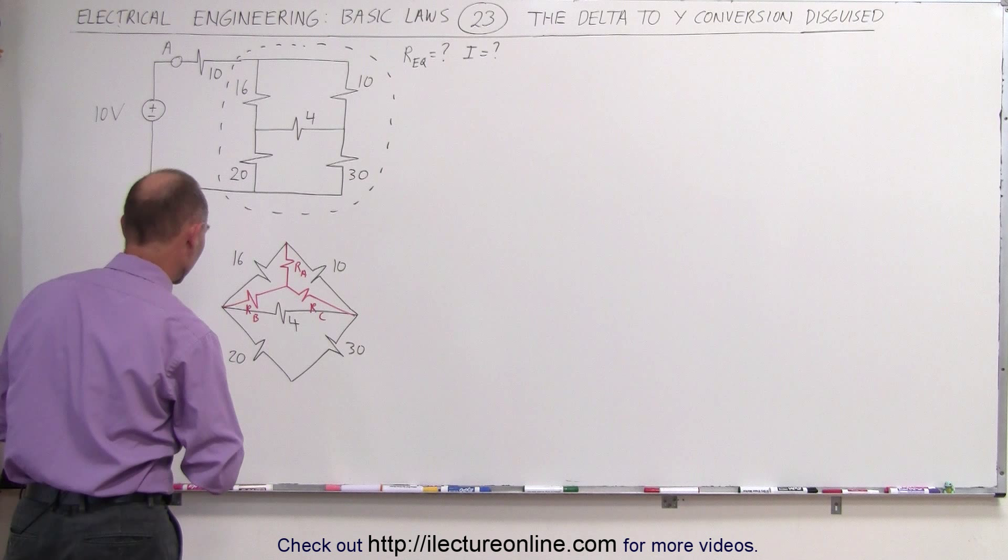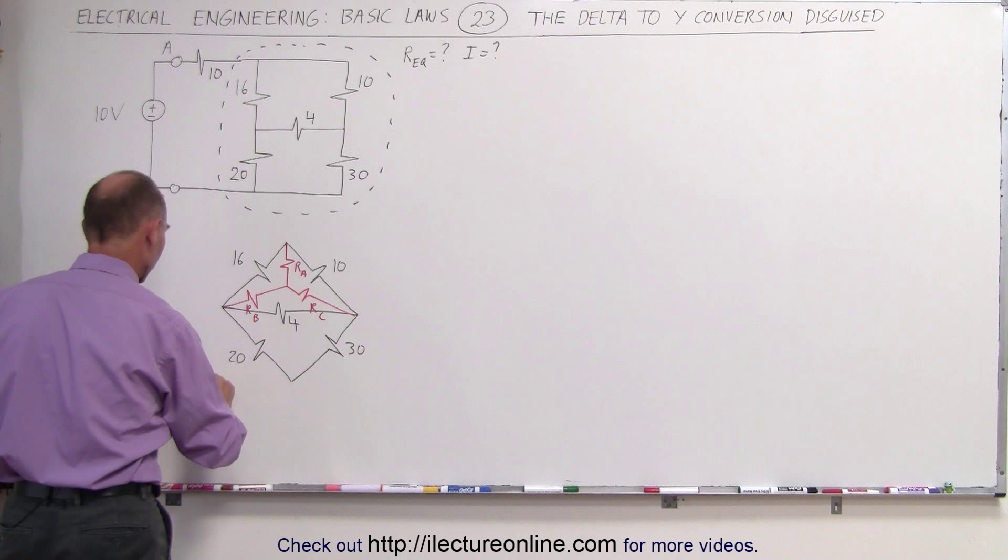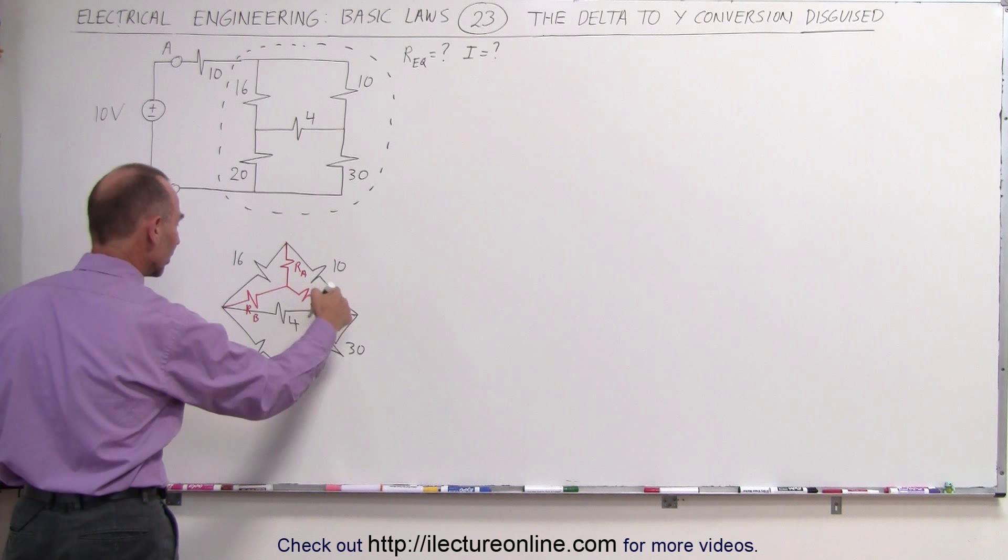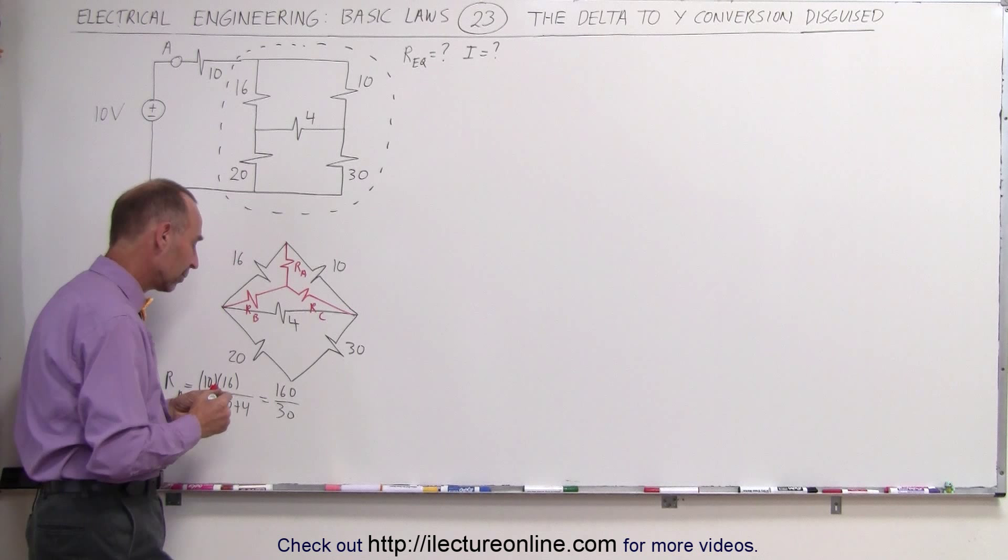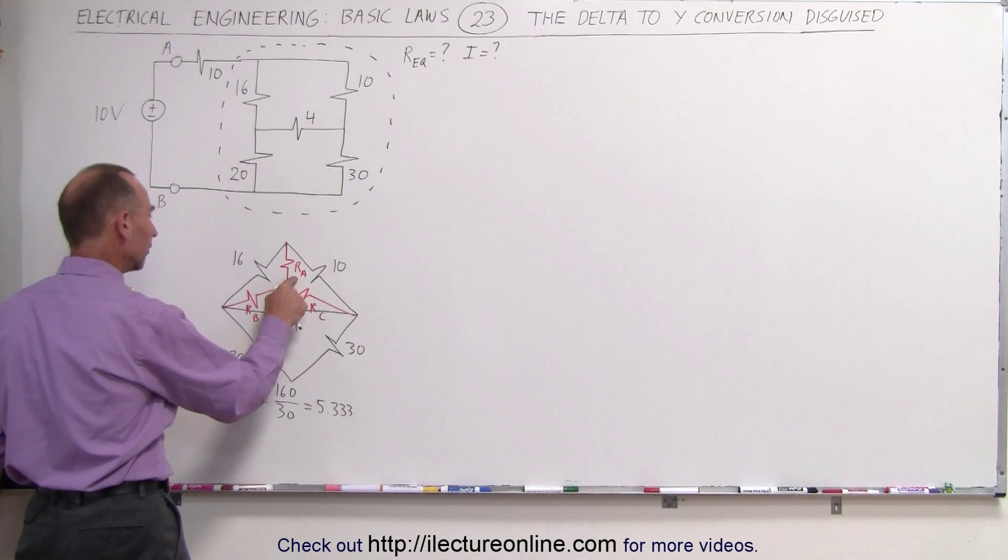R sub A is equal to the product between those two, which is 10 times 16, divided by the sum of all three resistors in the delta. That's 16 plus 10 plus 4, which is equal to 160 divided by 30, and that's 16 divided by 3, which is equal to 5.333. So the equivalent for R sub A is 5.333.